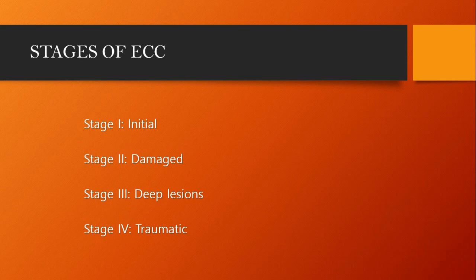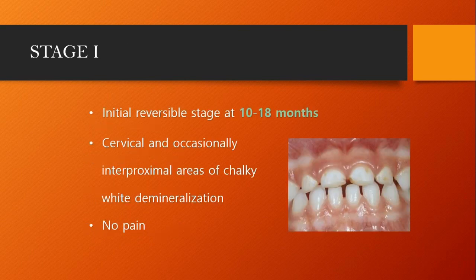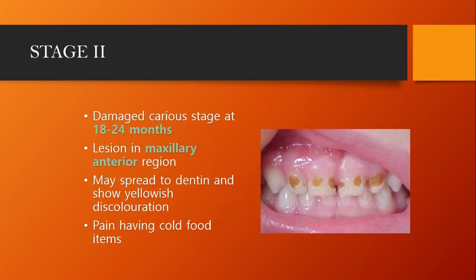There are four stages. Stage 1 is initial, Stage 2 damaged, Stage 3 deep lesions, and Stage 4 is traumatic. Stage 1 — initial, reversible — occurs at 10 to 18 months. There is cervical and occasionally interproximal areas of chalky white demineralization. At this stage there is no pain, so you should not expect that the child will complain of pain before a diagnosis can be made.